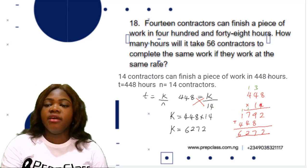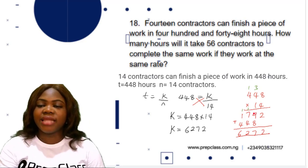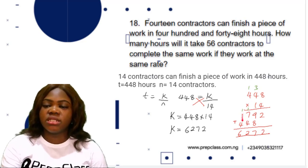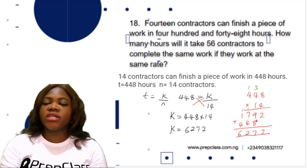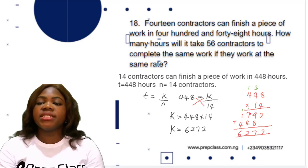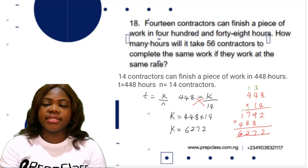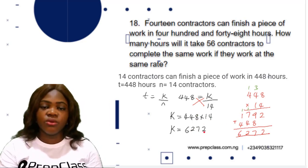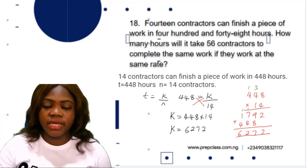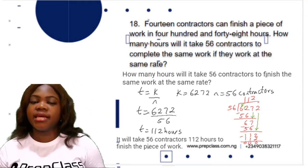Calculating 448 × 14: 4 × 8 = 32, write 2 carry 3; 4 × 4 = 16, plus 3 = 19, write 9 carry 1; 4 × 4 = 16, plus 1 = 17; then 1 × 8 = 8, 1 × 4 = 4, 1 × 4 = 4. Adding together gives 6,272. So the rate k = 6,272.